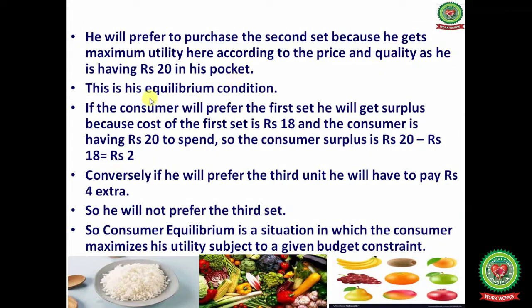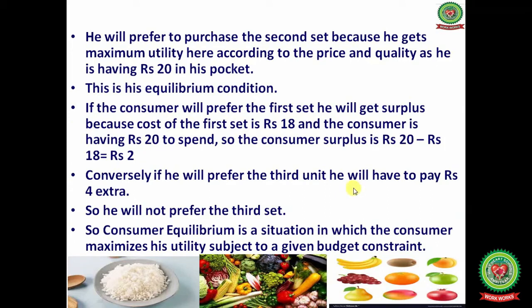Cardinal numbers are 1, 2, 3 and so on. Ordinal numbers like 1st, 2nd, 3rd are ranked numbers used when we cannot measure utility numerically — for example, honesty and beauty — so we give these ranks instead.